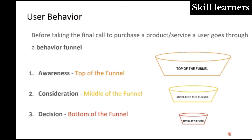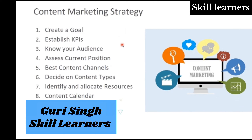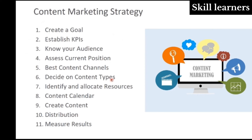Every content marketing effort needs a proper built strategy before execution. The important steps that come under content marketing strategy are: first, create a goal; then establish your KPIs to track metrics; know your audience; assess the current position of your brand, product, or service; identify the best content channels; decide on content types; identify and allocate resources; look into the content calendar — plan, execute, create content; distribute the content; and finally measure your results.